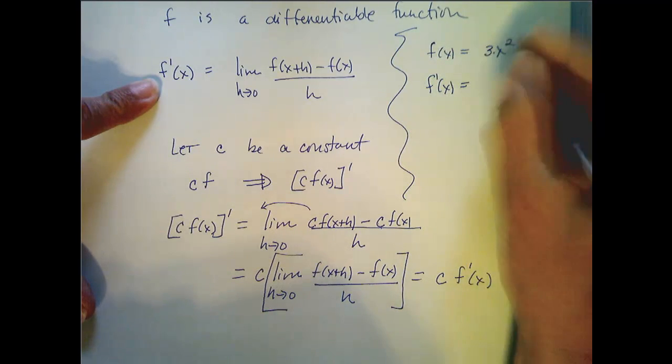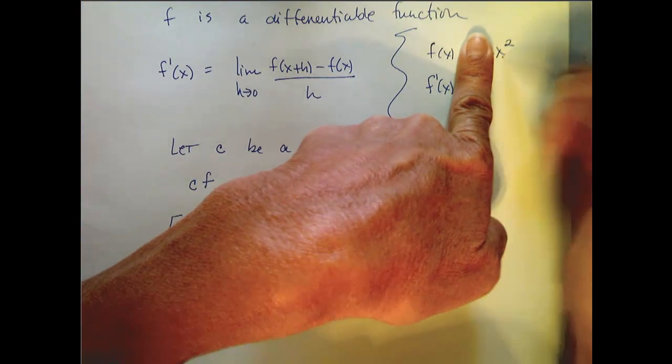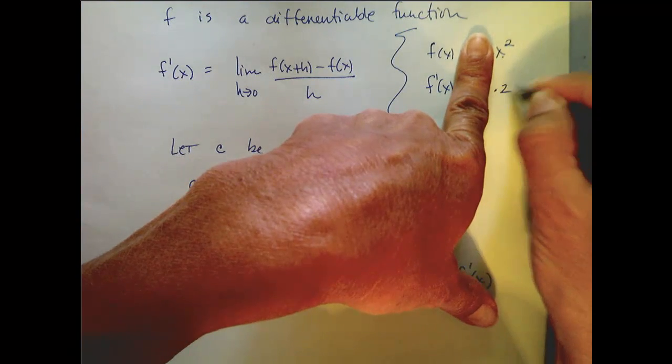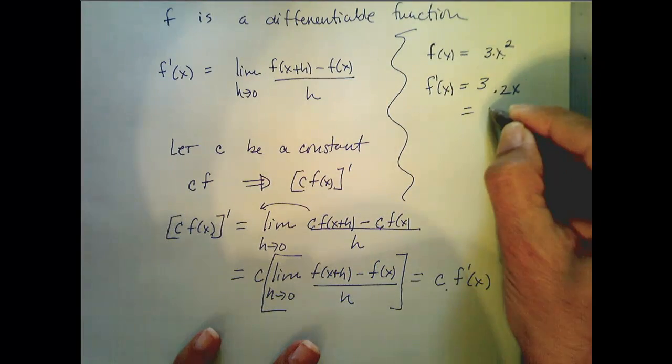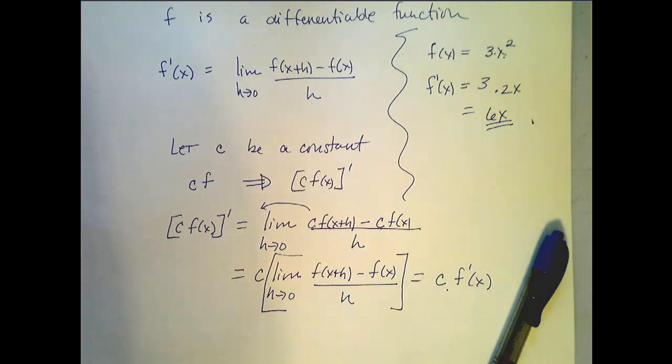well that constant is coming along with me, and now I'm going to take the derivative of x squared, which is 2x. So, in the end I have 6x. Sweet and simple.